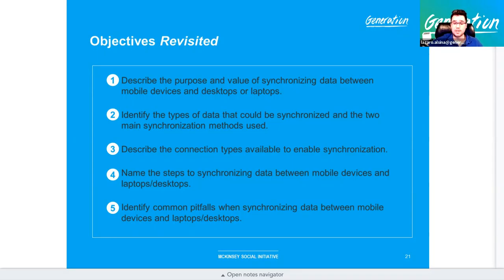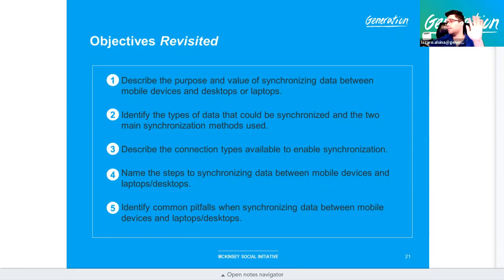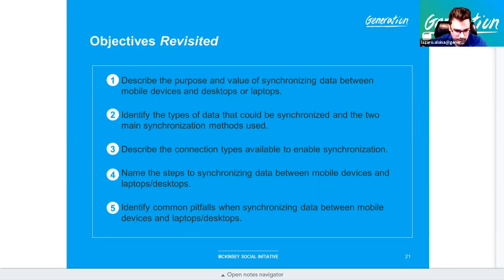Two main synchronization methods: push and pull. Push means data is sent to you automatically without any action required. Pull means you have to manually request the data — you put in the effort yourself. Push comes automatically; pull requires manual action.